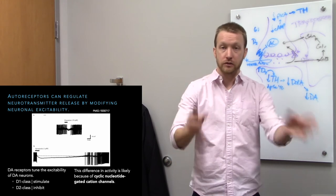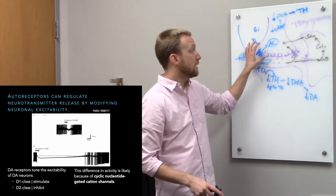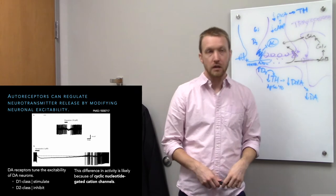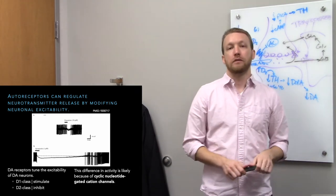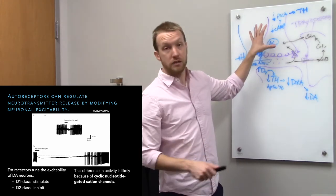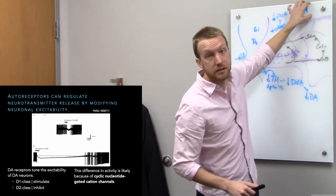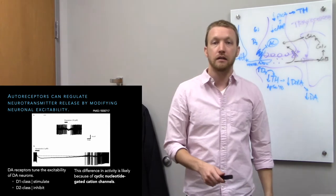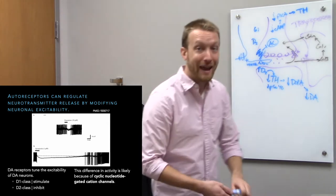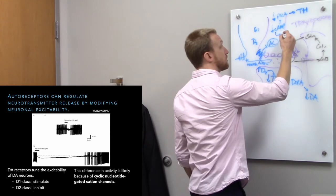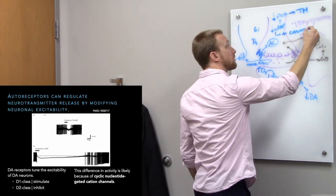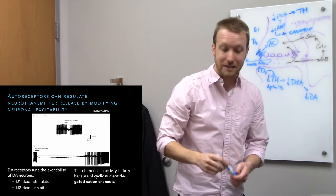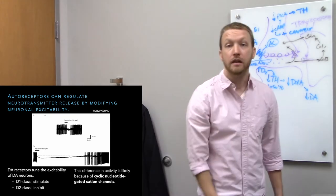If there's a lot of dopamine around, enough to bind autoreceptors, either we're releasing too much or not clearing it properly — so we probably don't need to spit out as much. Those autoreceptors can also regulate neuronal activity through a similar mechanism, but rather than going all the way to protein kinase A and hitting tyrosine hydroxylase, we stop at the level of cyclic AMP. Cyclic AMP stimulates cyclic nucleotide-gated cation channels, so decreasing cyclic AMP decreases cation conductance and thus decreases depolarization — you see a decrease in neuronal activity.